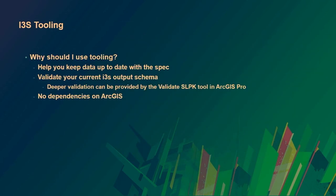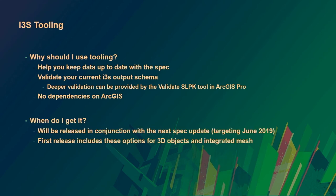We decided to create this tooling because it will help keep your data up to the most recent version of the spec and help you validate your I3S output schema. For now, it will validate the JSON schema you're outputting with your I3S content. If you need a deeper validation, there is a tool inside ArcGIS Pro called Validate Scene Layer Package. This tool is special because it has no dependencies on ArcGIS or ArcObjects, so it will be available for free on the Esri GitHub. We're planning to release it in conjunction with the next version of the spec, targeting June 2019 alongside the Pro 2.4 release, with the first release supporting 3D objects and integrated mesh.